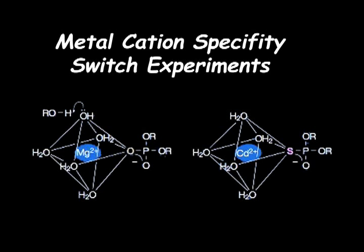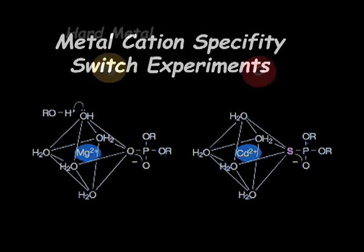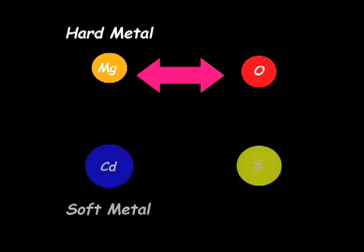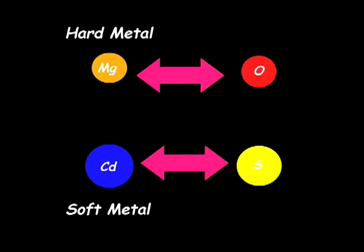The experiment is based on the differential affinity of a hard metal ion, such as magnesium, with oxygen and sulfur. Magnesium is a hard metal, which has higher affinity for oxygen compared to sulfur. Alternatively, cadmium is a soft metal, which has a higher affinity for sulfur compared to oxygen.